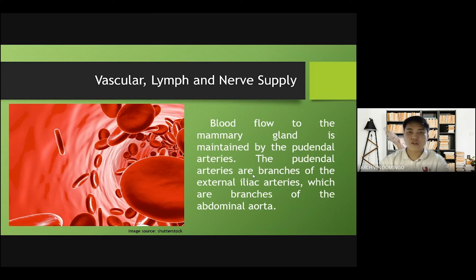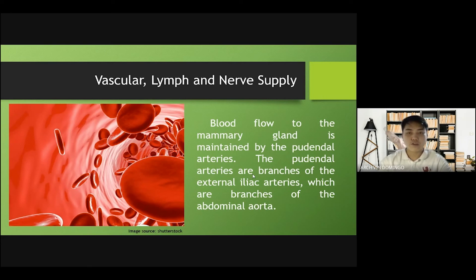Blood flow to the mammary gland is maintained by the pudendal arteries. The pudendal arteries are the branches of the external iliac arteries, which are the branches of the abdominal aorta.